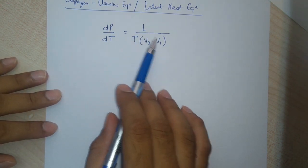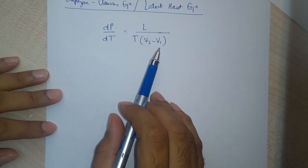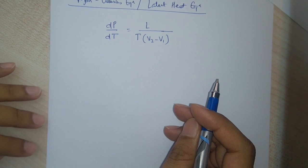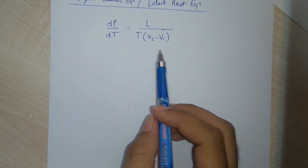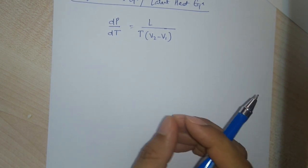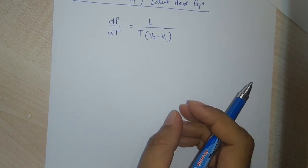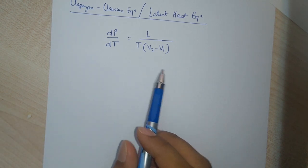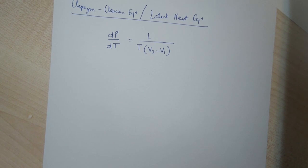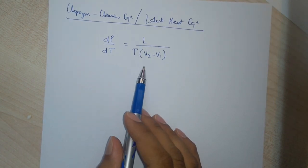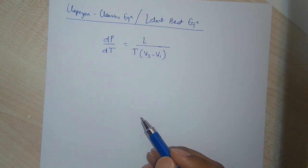This relation, the Clausius-Clapeyron equation, shows us how the melting point or the boiling point of a substance varies. Whenever there is a change in phase — from solid to liquid or liquid to gas — the temperature of the melting or boiling point depends on the pressure and the characteristics of the substance. In nature, all known substances in the two-phase regions fulfill the Clausius-Clapeyron equation, and this provides the general validity of the first and second law of thermodynamics.